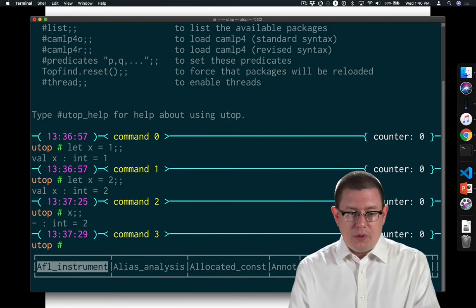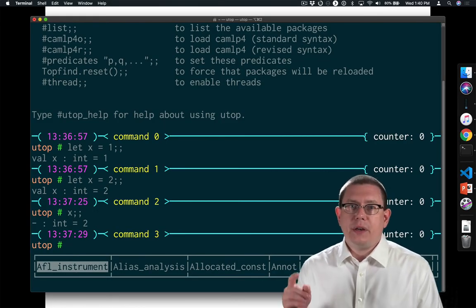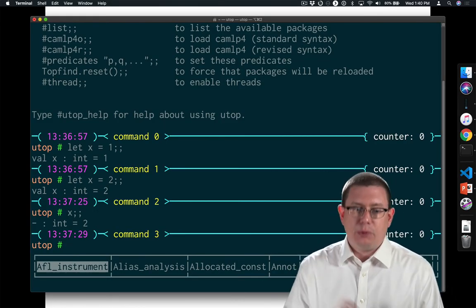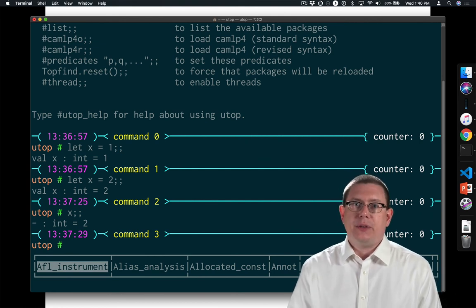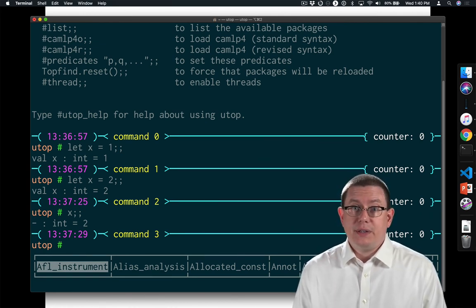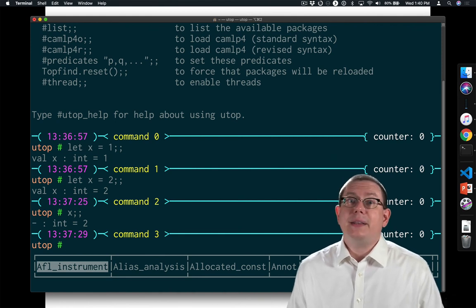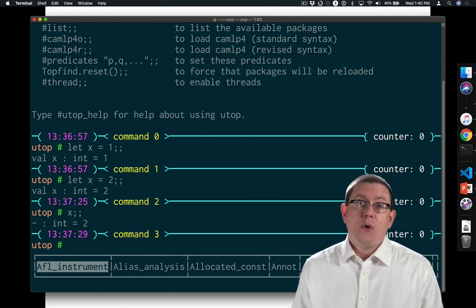Back in the top level, you might ask, well, is there a way to go back and refer to that x that was bound to 1 as opposed to the x that was bound to 2? No, there really isn't. In the top level, we're not going to be able to get back to that outer level of scope.